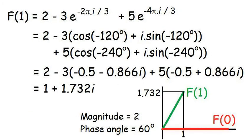Here I've put in the cosine and sine in the formula, and tied it up afterwards. Once the dust has settled, you can see that F1 comes out as 1 plus 1.732i, which I've added to the argand diagram on the bottom right of the screen. This component has a magnitude of two units, and a phase angle of 60 degrees.